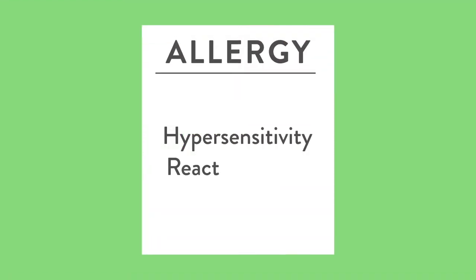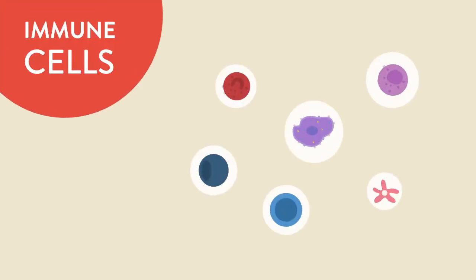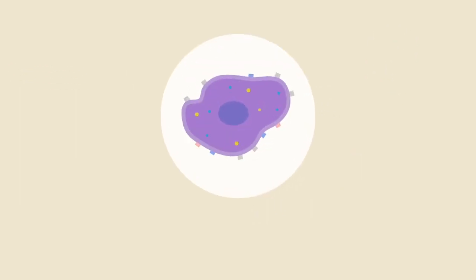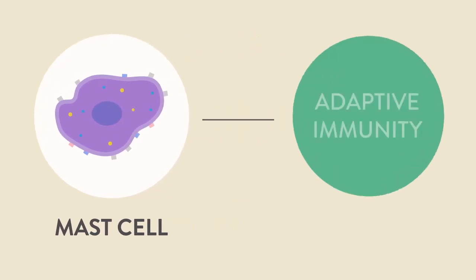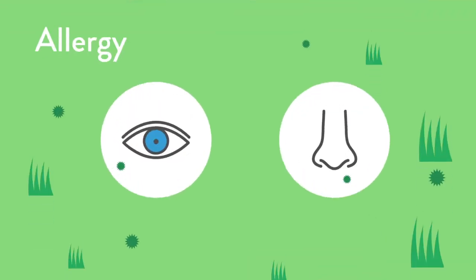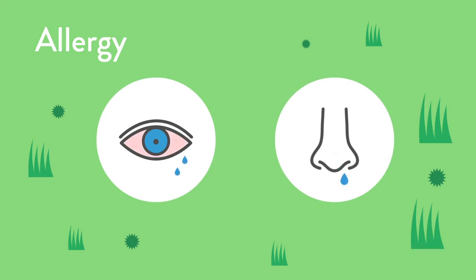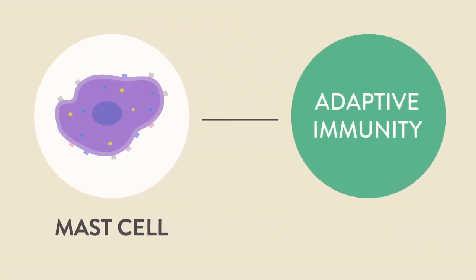In Lecture 1, we defined what an allergy is — a type of hypersensitivity reaction, a type 1 hypersensitivity reaction, by the Gell-Coombs classification. Now, I introduce you to the defenders of the immune system. These are white blood cells. The main white blood cell involved in allergies is the mast cell. The mast cell works either in isolation or with the help of the adaptive immune system to cause allergies. We also learned that allergies are a result of your body mistaking something that is not harmful to you as something that is harmful.